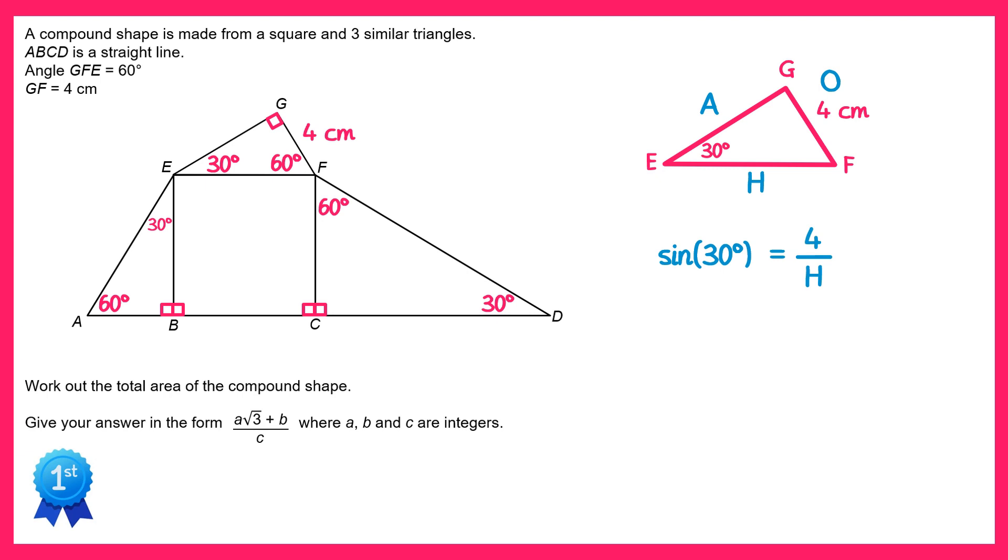So we're able to write down sine 30 equals the opposite which is 4 divided by the hypotenuse. Now sine 30 just equals one half, so we need to find a value of h so that we end up with 4 over h being one half. That will be 8 since 4 over 8 is one half, so the value of h is 8. We can add this to our diagram.